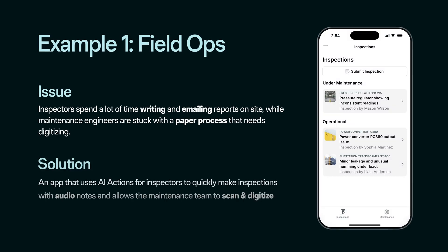The first example is built for field operations. In this example, inspectors spend a lot of time writing and emailing reports while they're on site on their phones, and the maintenance engineers are stuck in an old paper process that needs to be digitized. The solution is an app that uses AI actions for inspectors to quickly make inspections with audio notes and allows the maintenance team to scan and digitize their paper process.